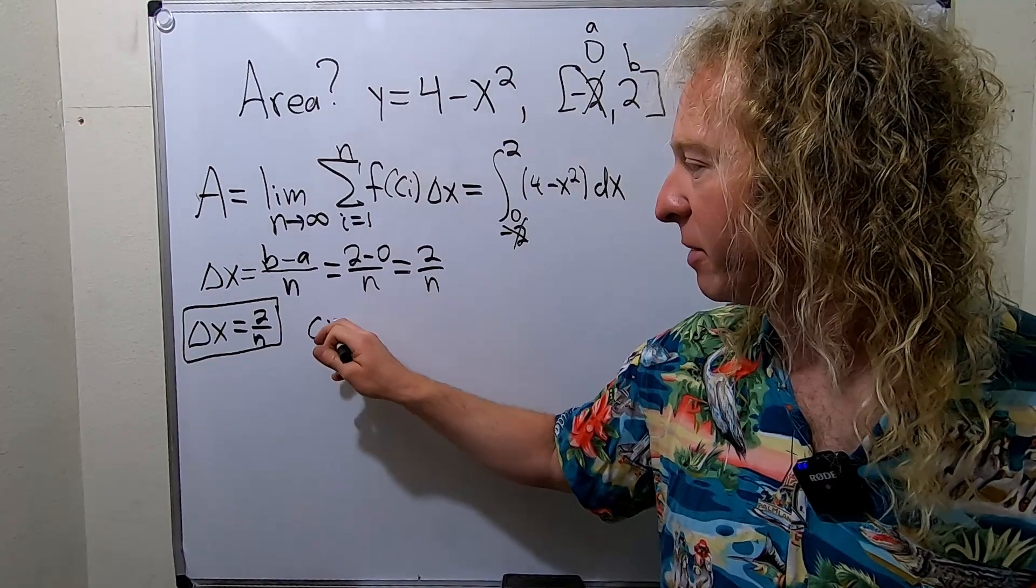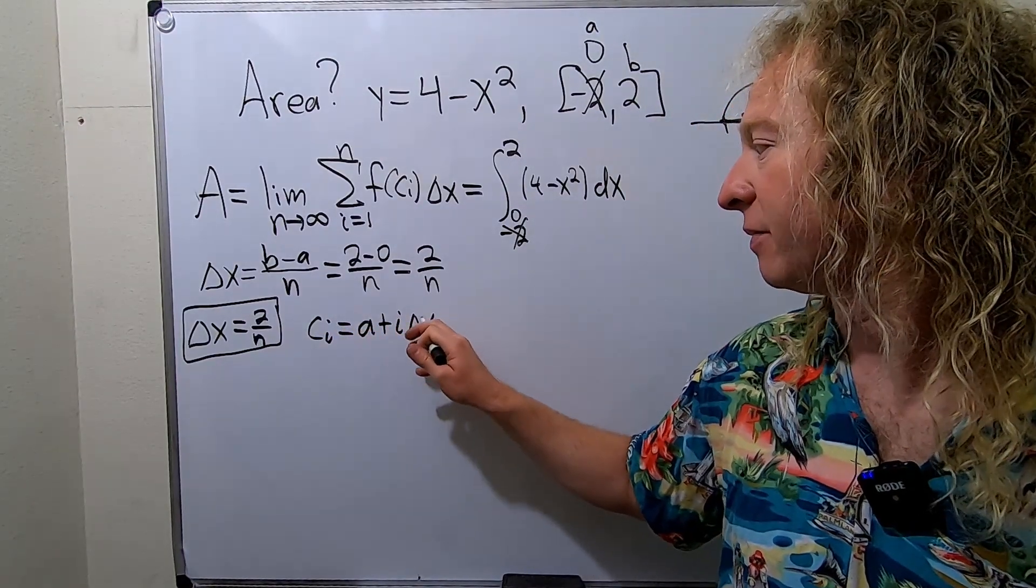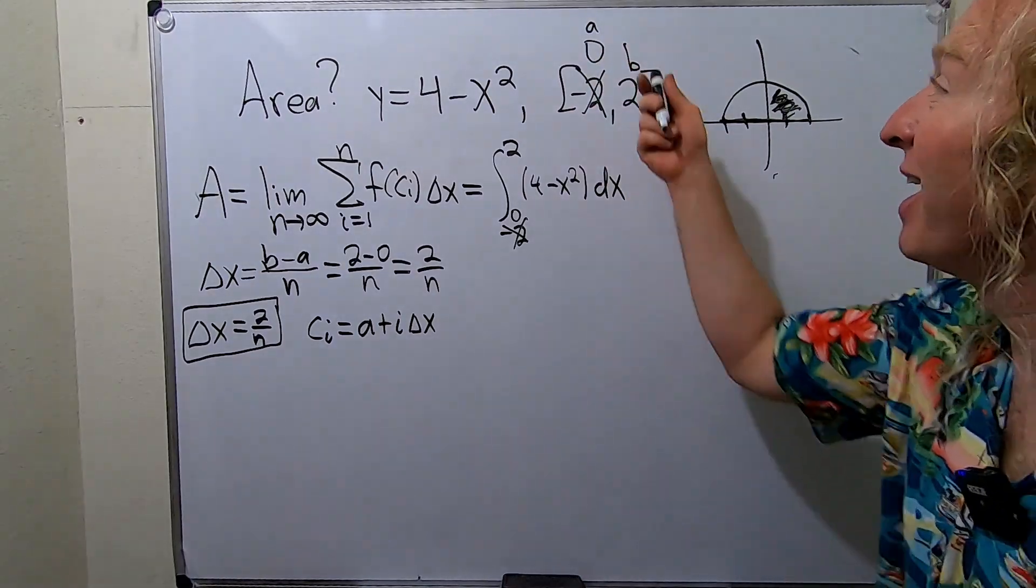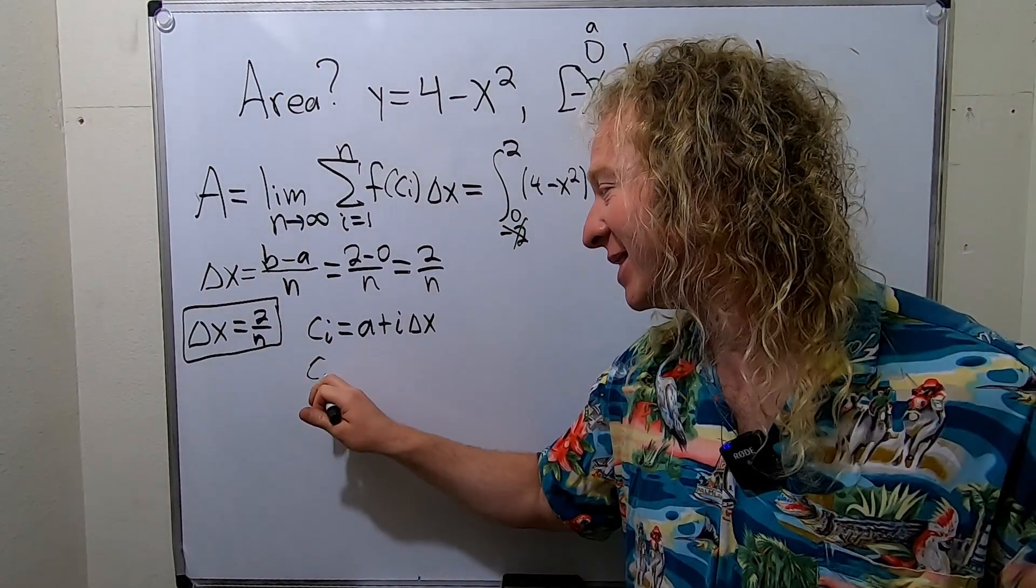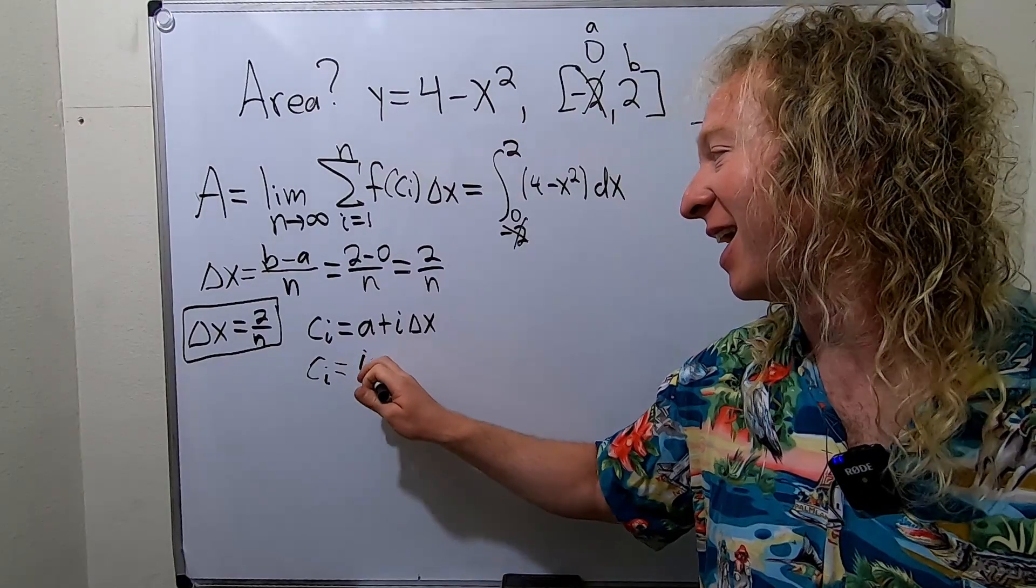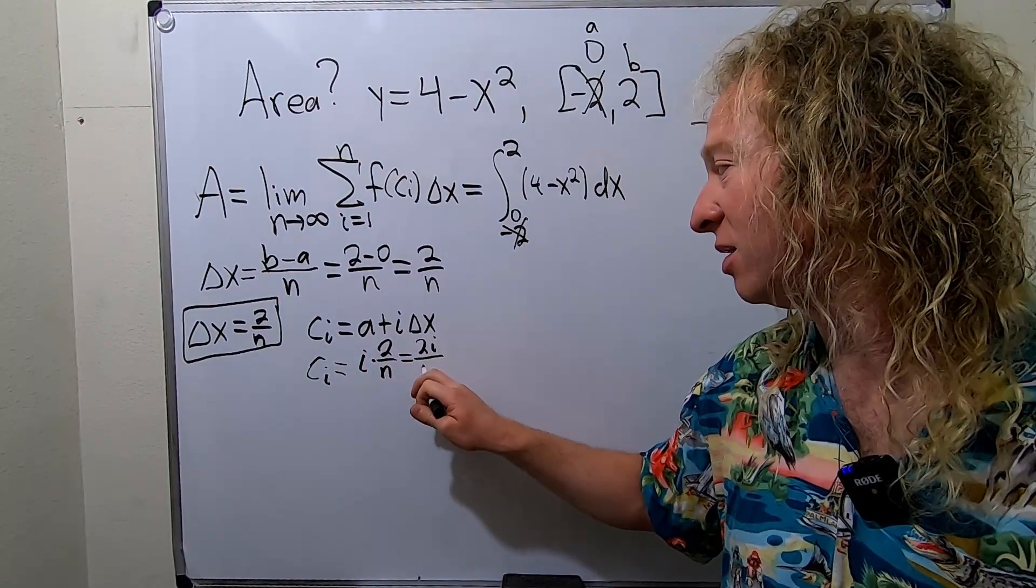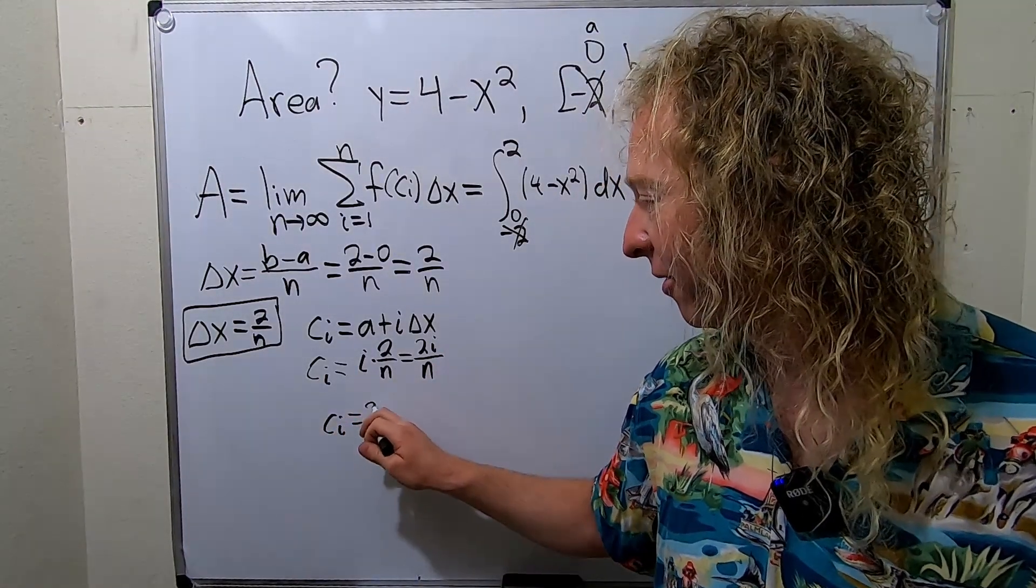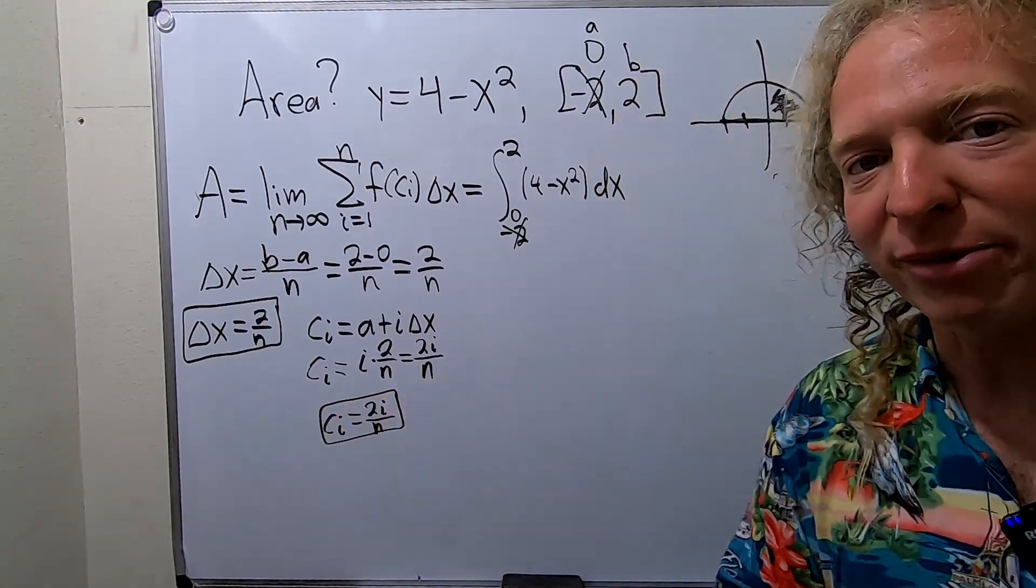C sub i is another formula. It's a plus i delta x. So a is 0. This is why I did this. It makes it so much easier when a is 0. So c sub i, it's gone because it's 0. So you just get i times 2 over n. So c sub i is equal to 2i over n. So that's an accomplishment.